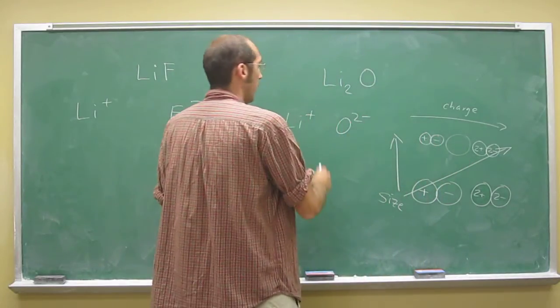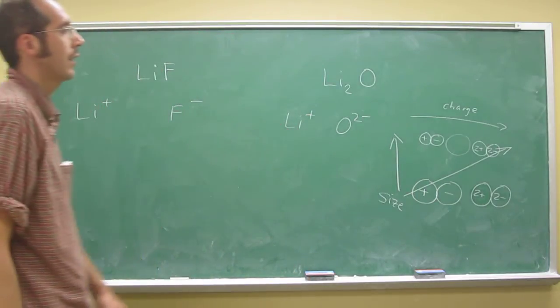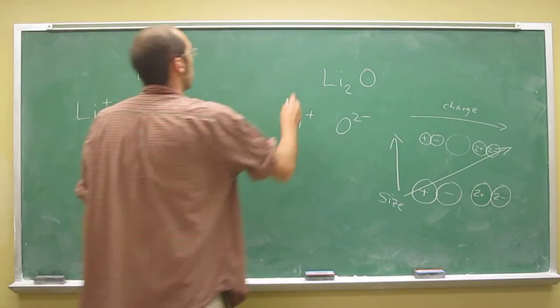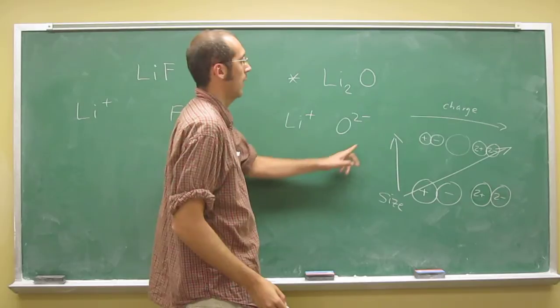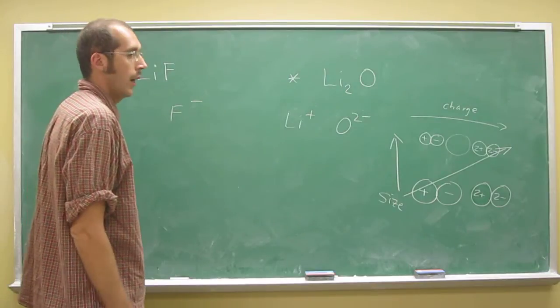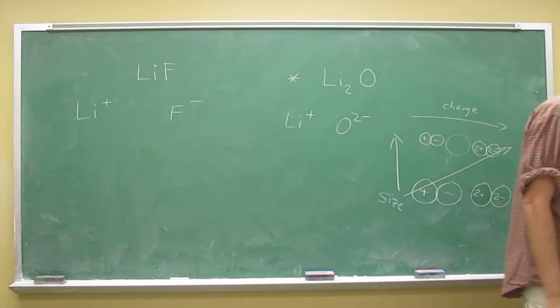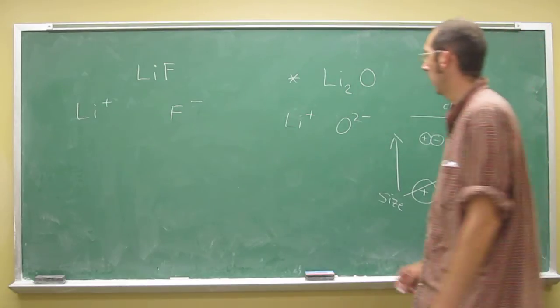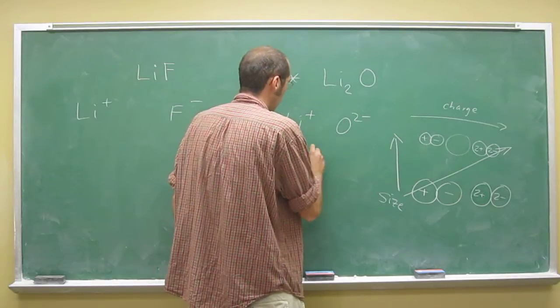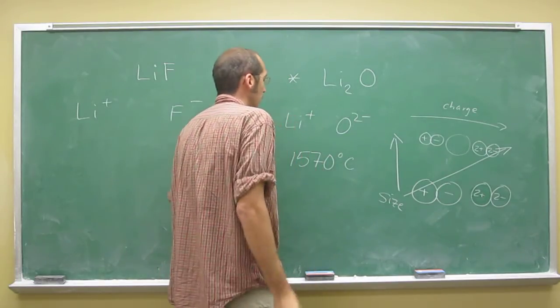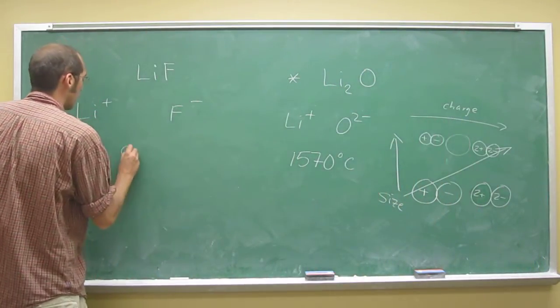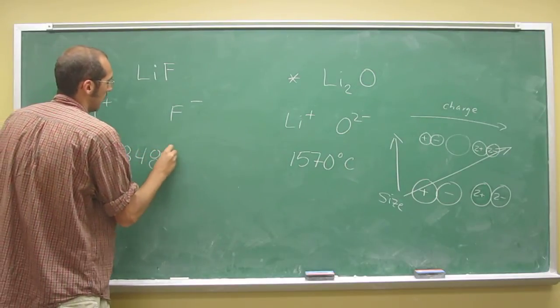So in other words, if we were to qualitatively assign which compound has the stronger ionic bond, it would be lithium oxide because we've got this negative two and positive one, as opposed to here where we've got just a negative one. If we compared the melting points of these compounds, it does follow suit - this is 1570 degrees Celsius and lithium fluoride is 848 degrees Celsius.